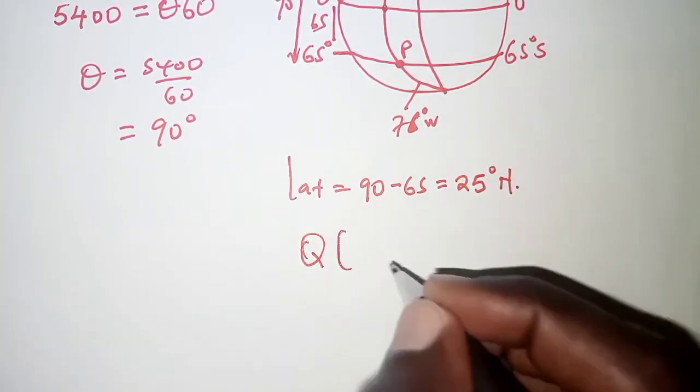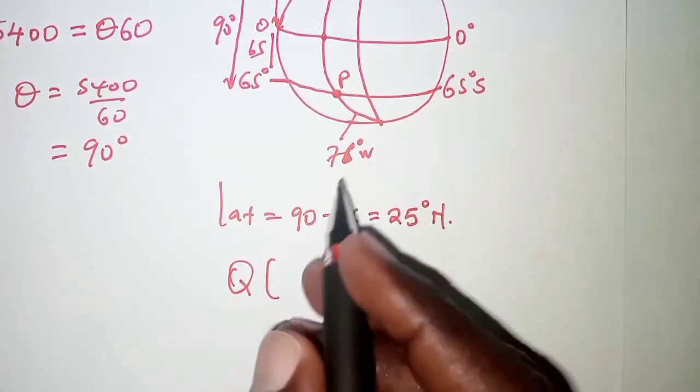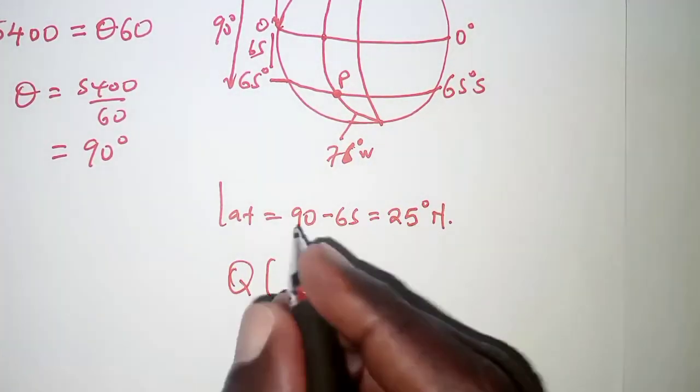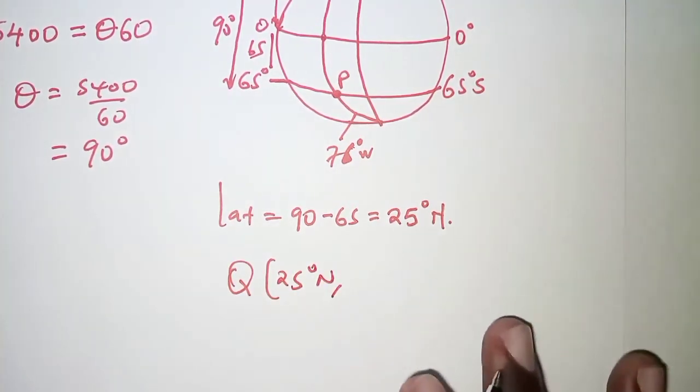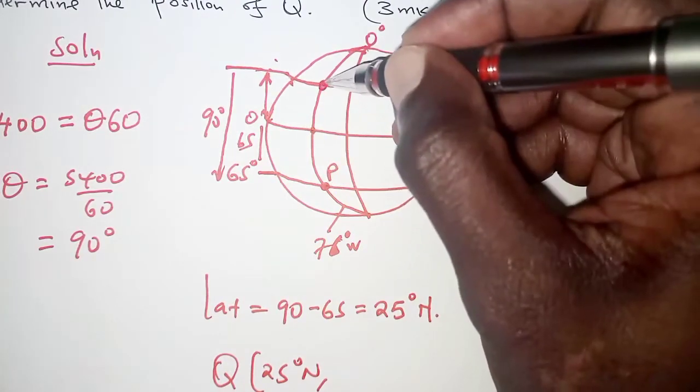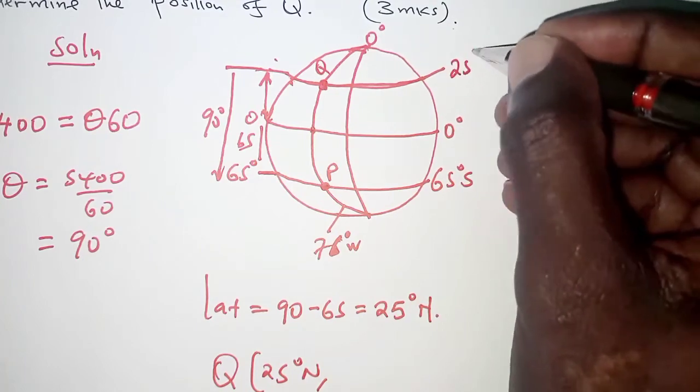The position of Q would give us the ordered pairs. So we'll have latitude, longitude and the latitude we know is 25 degrees north. The longitude, remember the plane was moving from P up to Q. Q now is here.